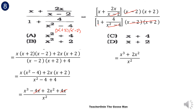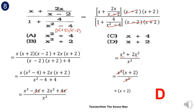Looking closely, the common factor in the numerator is x squared. Factoring out gives x squared times (x plus 2) all over x squared, because x cubed divided by x squared is x, and 2x squared divided by x squared is 2. Removing the greatest common factor, the answer is x plus 2. The correct answer is letter D.